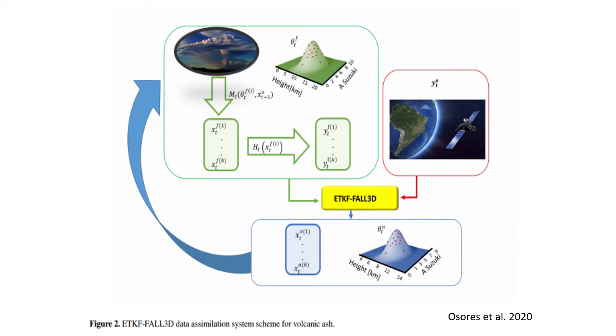All these outputs and how they are calculated depends on which type of software you are using. This process can become even more complex when the numerical code is part of a bigger algorithm — for example, with the addition of near real-time information coming from satellites, what we call a data assimilation process. This is often the case when dispersal codes are part of operational response, where eruption source parameters plus satellite observations, integrated together, allow for an updated and more reliable forecast.